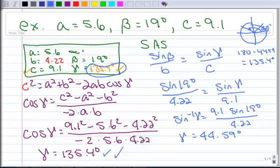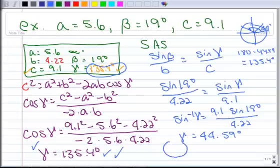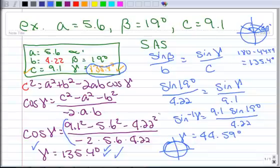One of the advantages of using law of cosines — even though it looks like more work, it's really not — is that you don't have to worry about that second angle, because the law of cosines automatically gives you the correct angle. With inverse cosine, positive cosines correspond to 0 through 90 degrees, and negative cosines correspond to quadrant 2, which is 90 to 180 degrees. So the correct angle just pops up automatically based on what you put in for your inverse. That's an advantage to using the law of cosines.